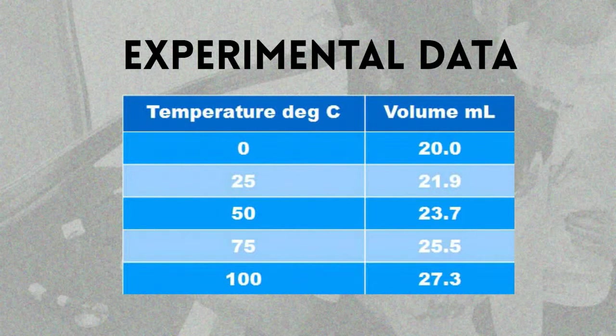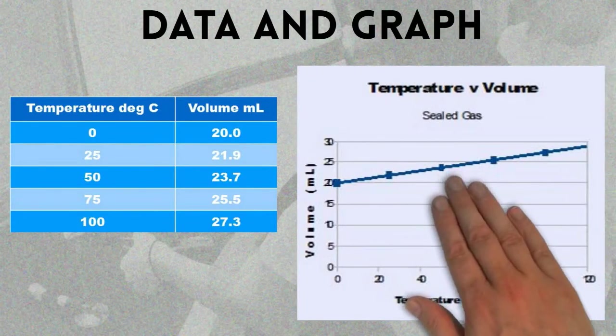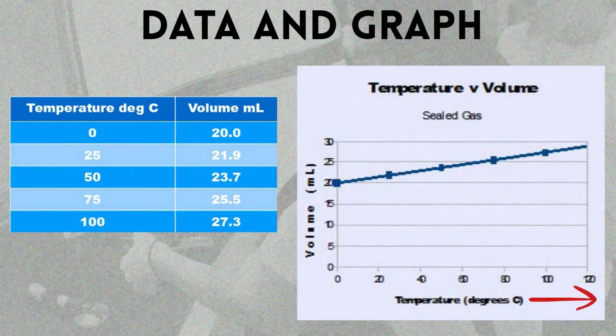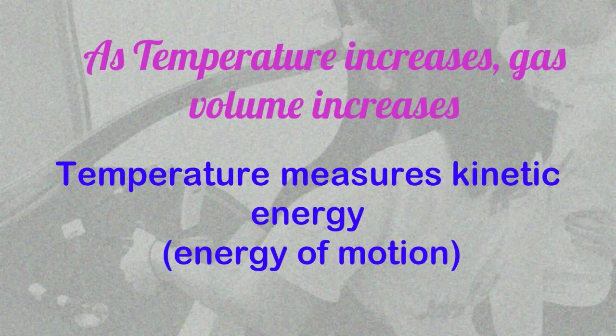One group of students measured gas volume as a function of temperature and got this data. Their initial graph looked like this, and of course as the temperature increased, the volume of the gas increased. They reasoned that temperature measures kinetic energy, energy of motion.